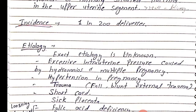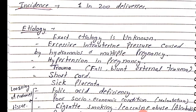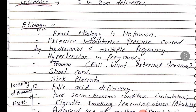Etiology: the exact etiology is unknown. One cause is excessive intrauterine pressure caused by hydramnios and multiple pregnancies. In hydramnios or multiple pregnancies, intrauterine pressure increases, causing the placenta to separate. Because the uterus increases in size, the endometrium is also distended, leading to placental detachment.